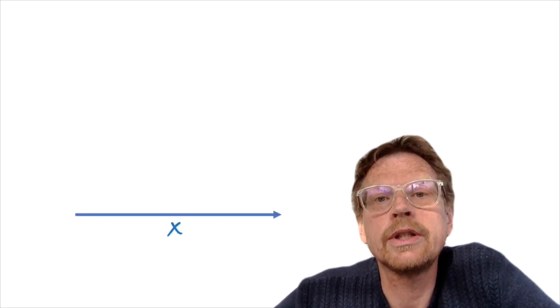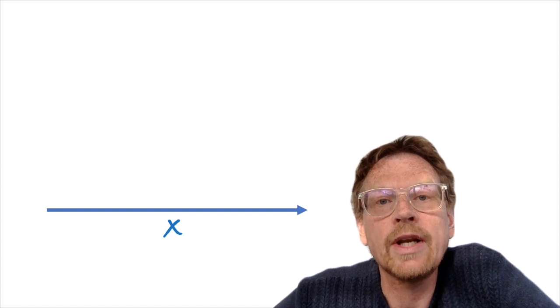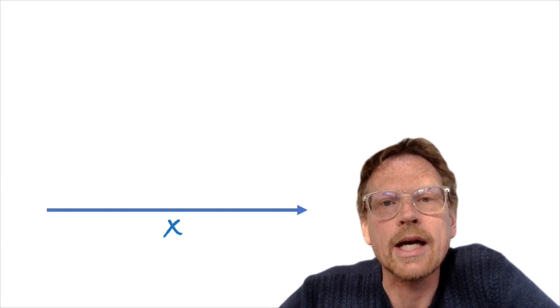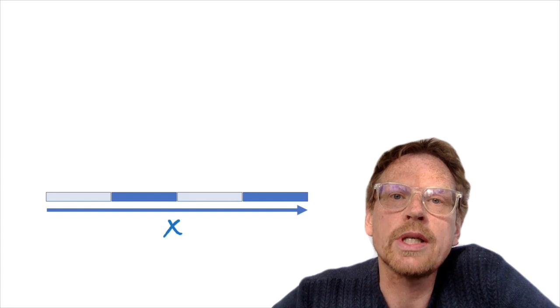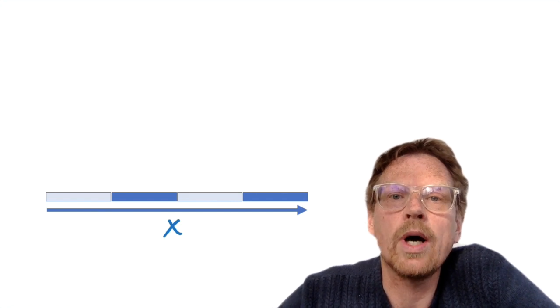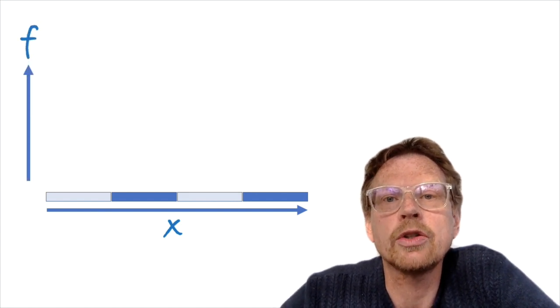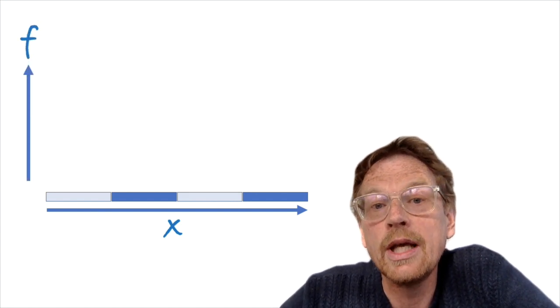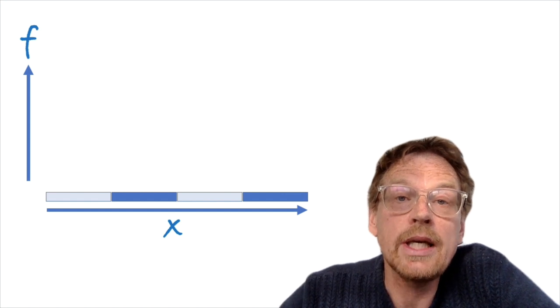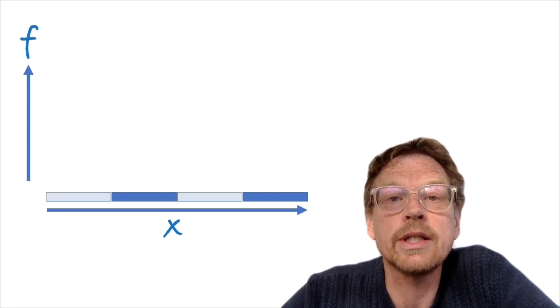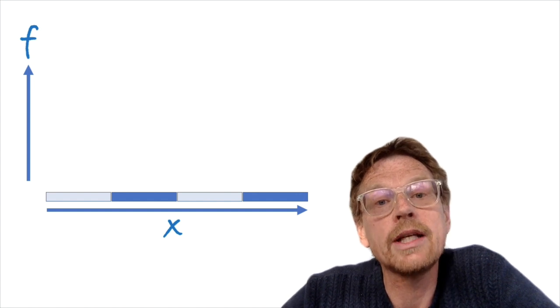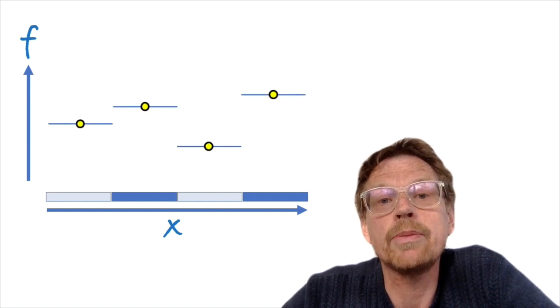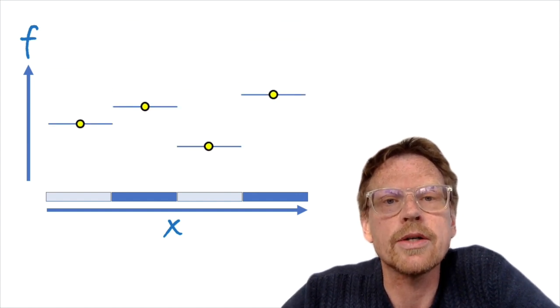To make things simple, I'm going to consider one dimension first, which I've labelled here x. In the x dimension, we imagine a set of grid boxes, one by one, in which we're going to define a function called f. Now f could be humidity, it could be temperature, precipitation — it doesn't matter. But we have some variable that's defined in each of these grid boxes, marked by the yellow dots.